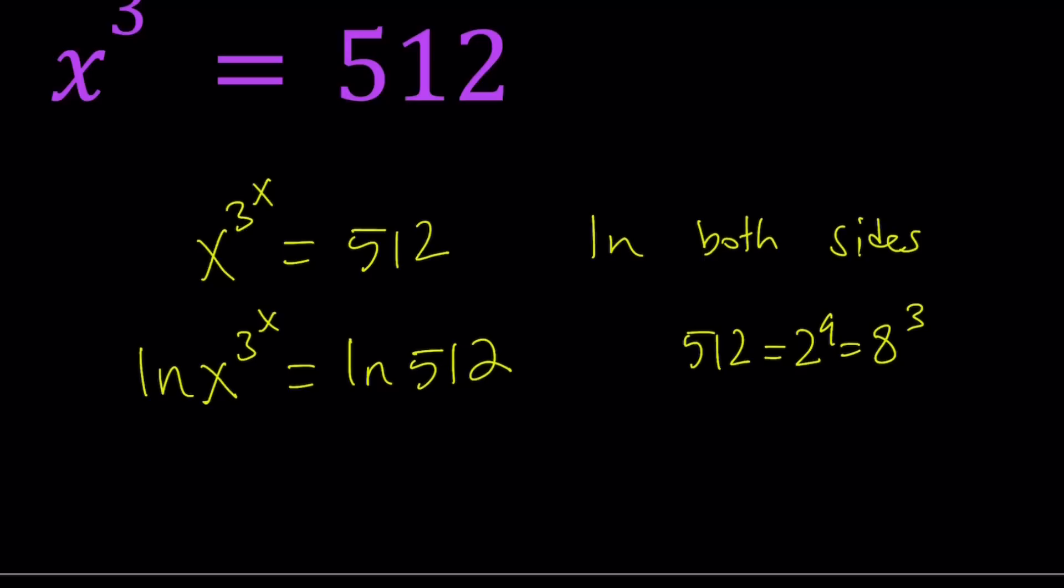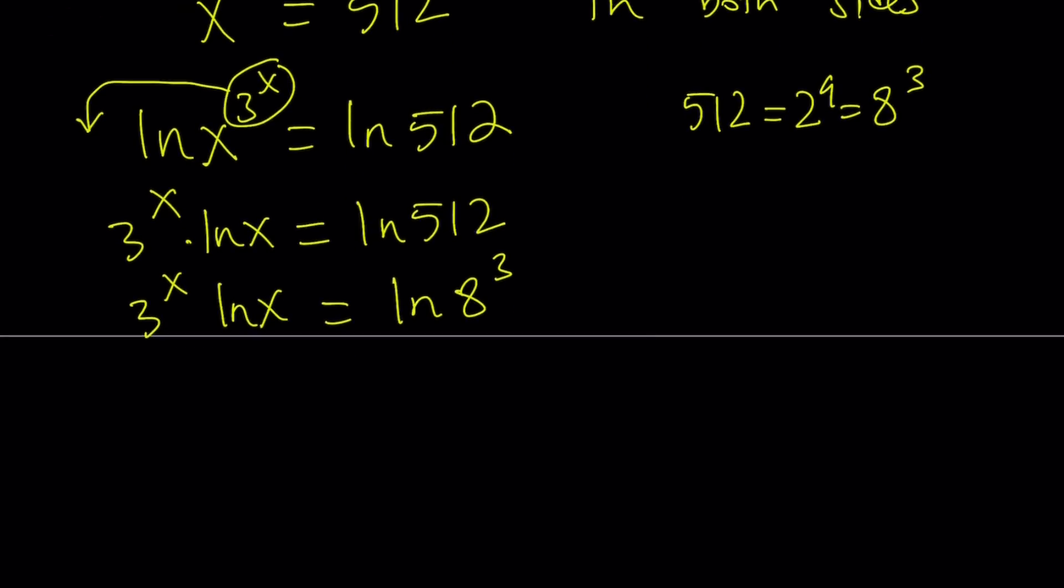So there's different ways to write it using powers. Now, what can I do using properties of ln? We can go ahead and bring this down. So we get 3 to the power x times ln x equals ln 512. At this point, it's not clear what the x value is. Looking at this, I see that I can use 2 to the 9th power or 8 to the 3rd power. How about starting off with the 8 to the 3rd power? I'm going to write this as 8 to the 3rd power and then go ahead and move the 3 here.